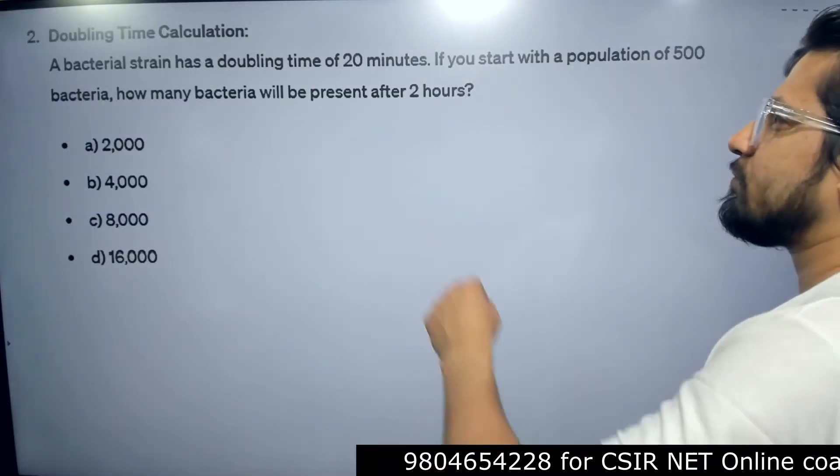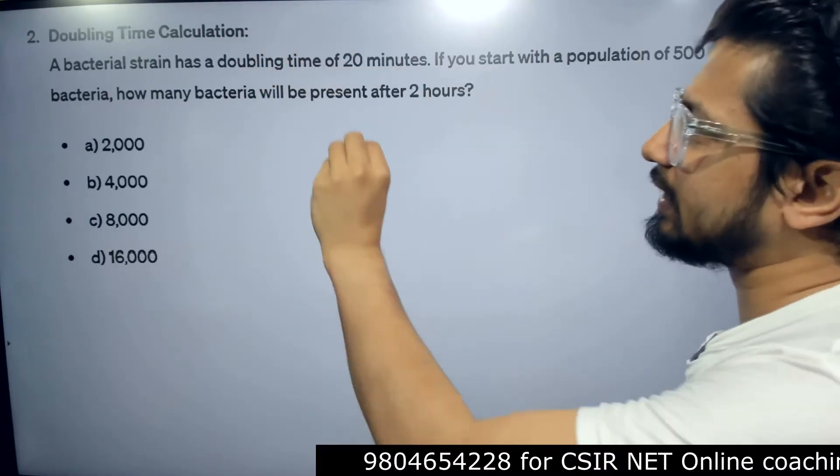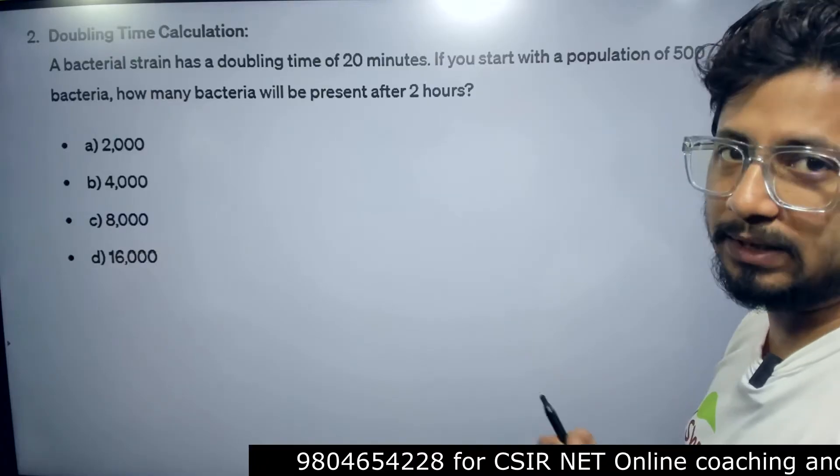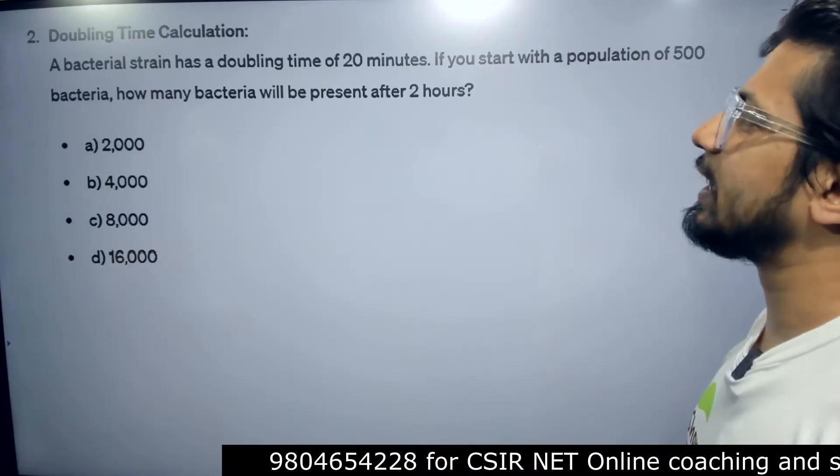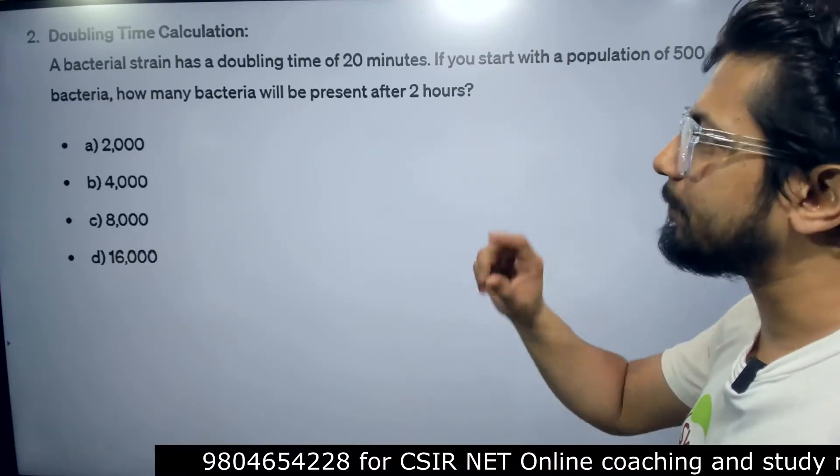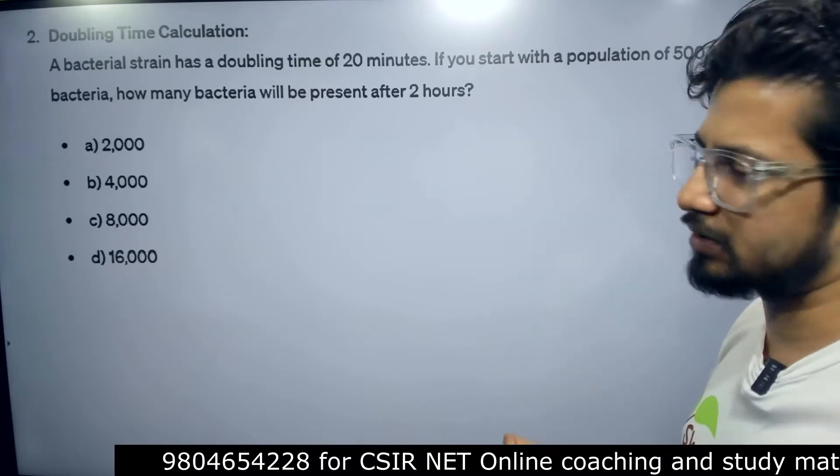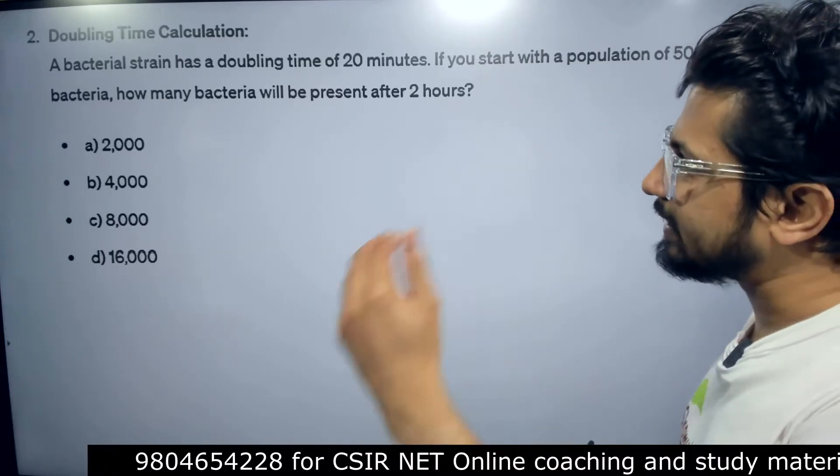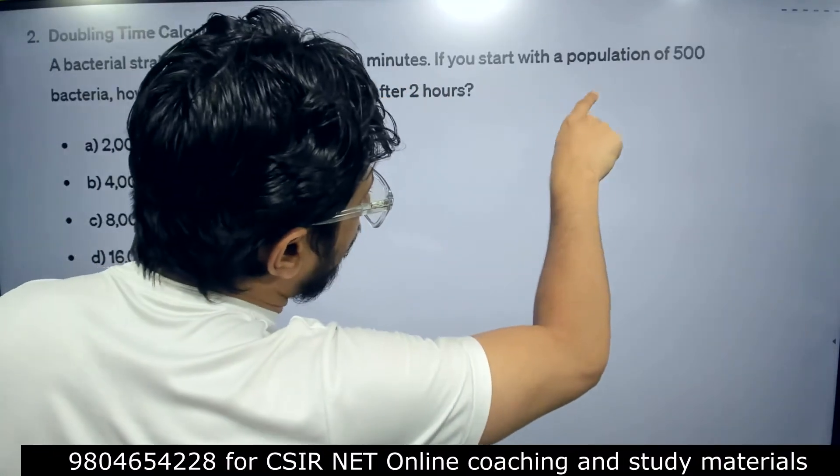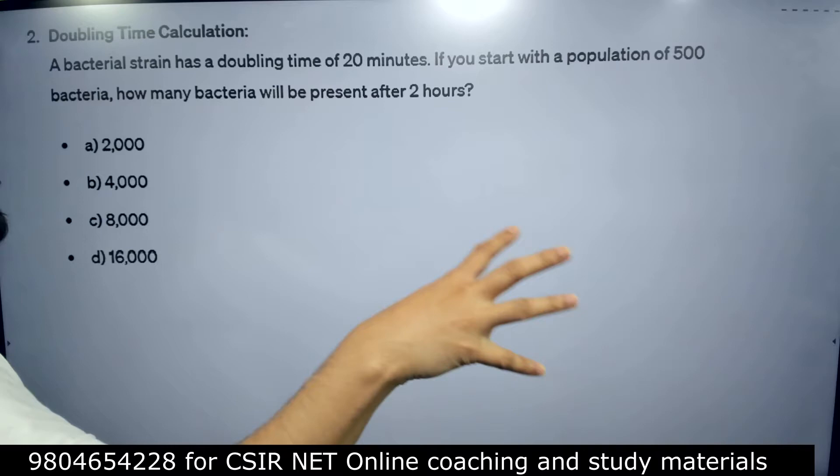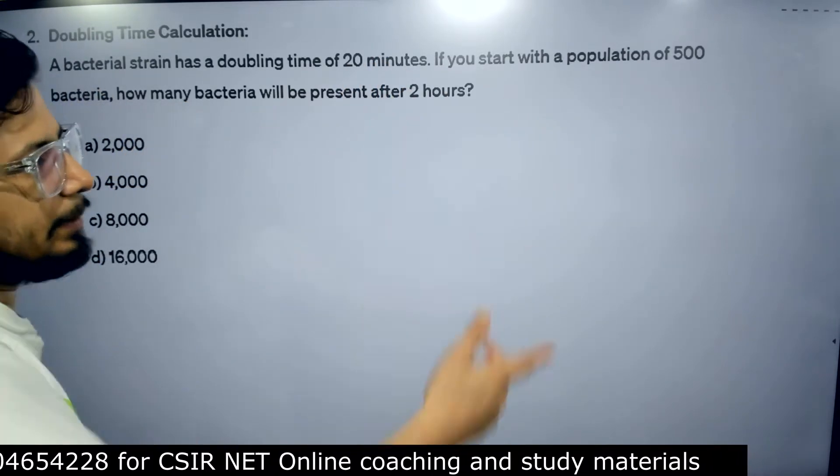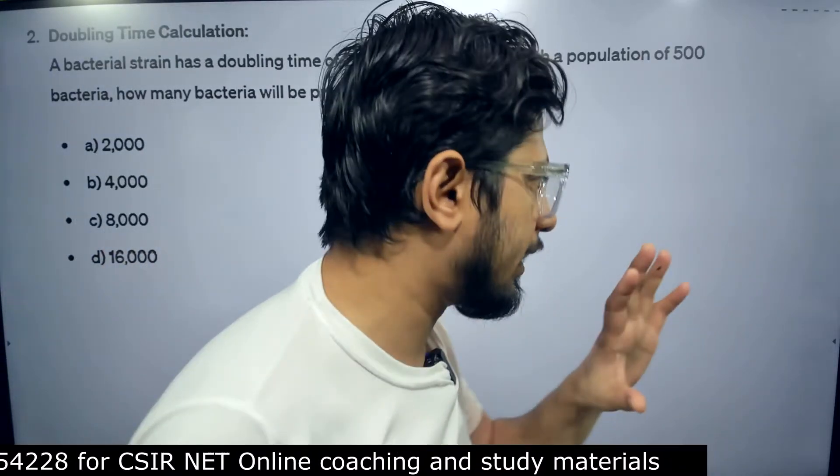The first question we have is regarding the doubling time calculation. This is the most common type of question in exams. A bacterial strain has a doubling time of 20 minutes. If you start with a population of 500 bacteria, how many bacteria will be present after 2 hours? Very simple question. The bacteria doubles in 20 minutes, starting with 500 bacteria. How many total bacteria will there be after 2 hours?